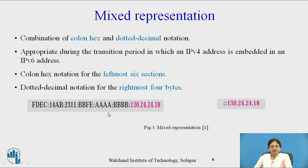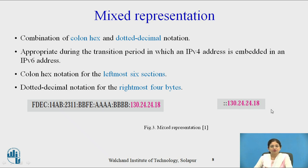Suppose the six leftmost sections are all zeros, then the address is represented by double colon followed by the remaining rightmost 4 bytes in dotted decimal notation as usual. This is the mixed representation.